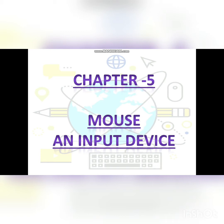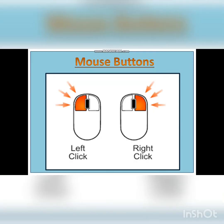Today we will continue chapter 5, Mouse and Input Device. Mouse Buttons: There are two buttons on the mouse — the left button and the right button. When we click the right mouse button, we call it the right click. And when we press the left mouse button, we call it the left click.